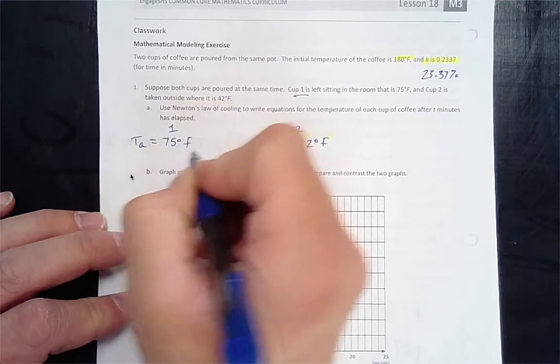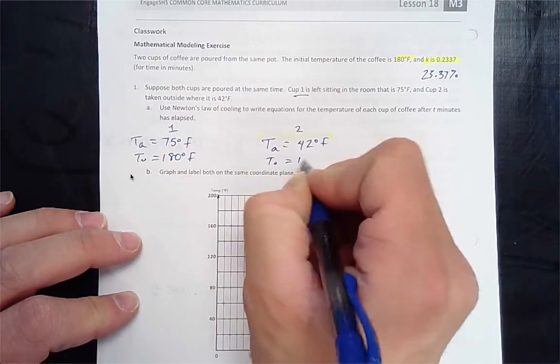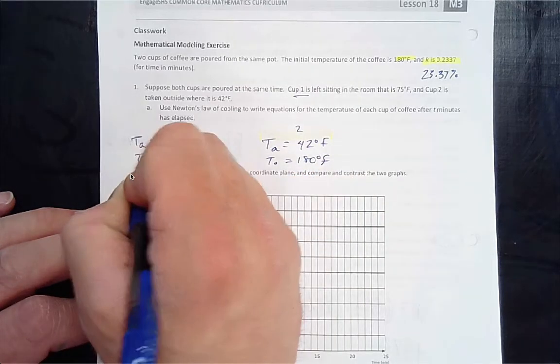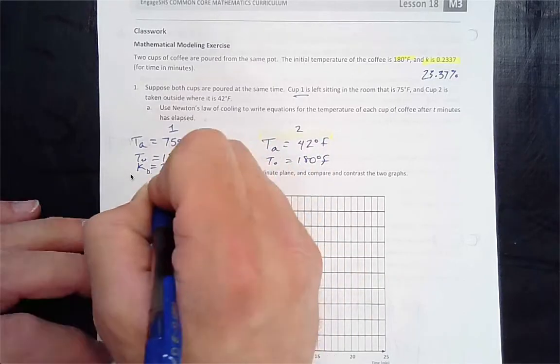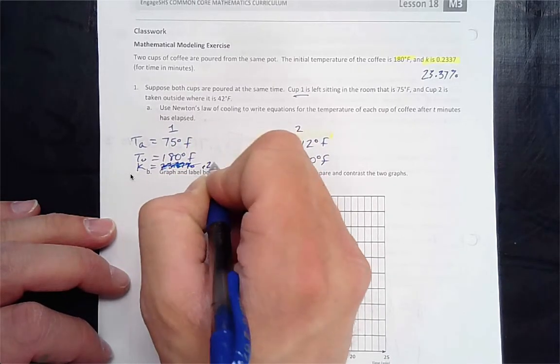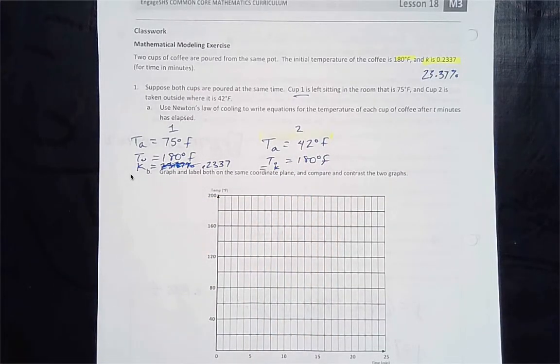Coffee cup 2 is taken outside where it's 42 degrees Fahrenheit. Obviously it's gonna cool faster. T_0 is the same for both: 180 degrees Fahrenheit. K is the same: 0.2337.